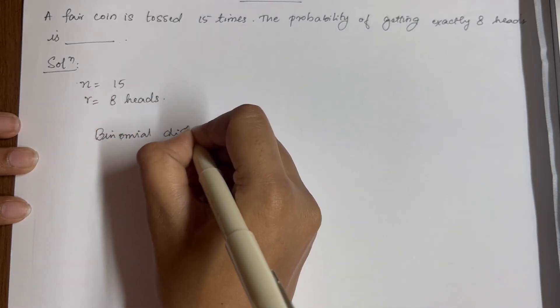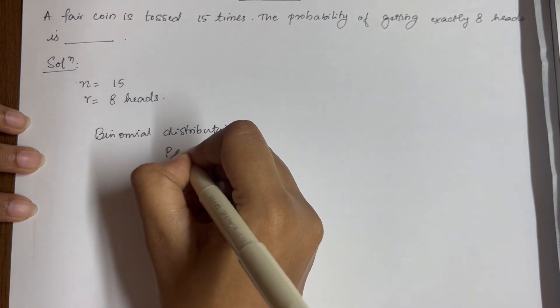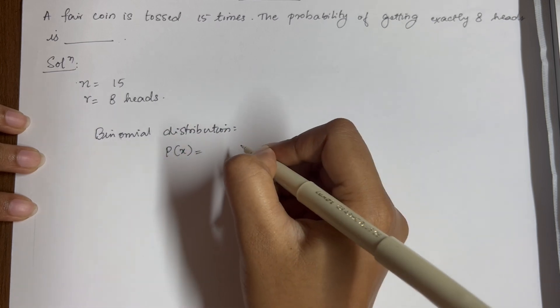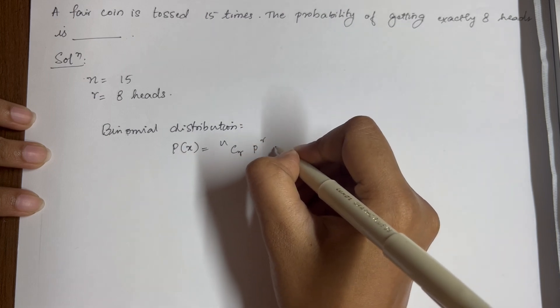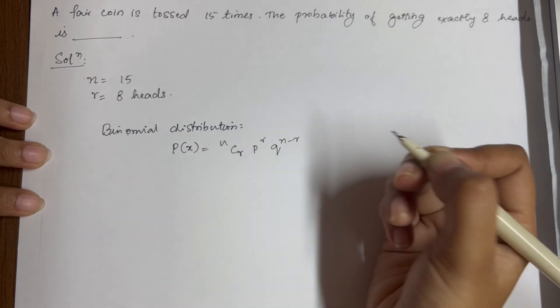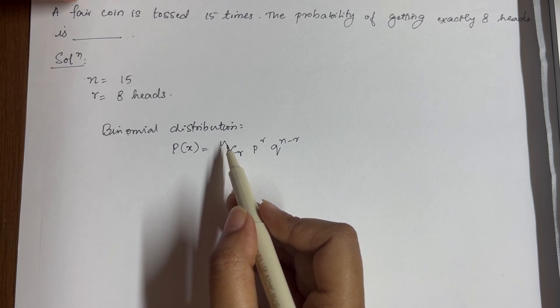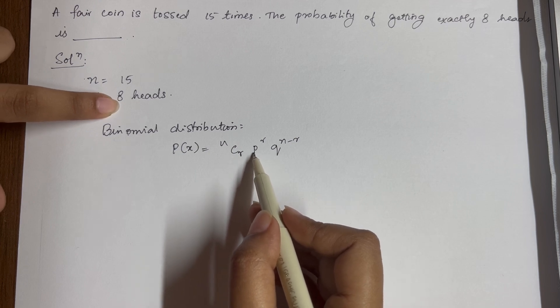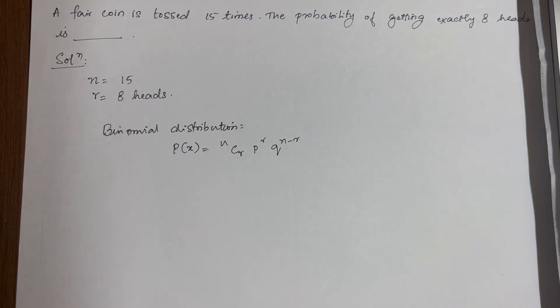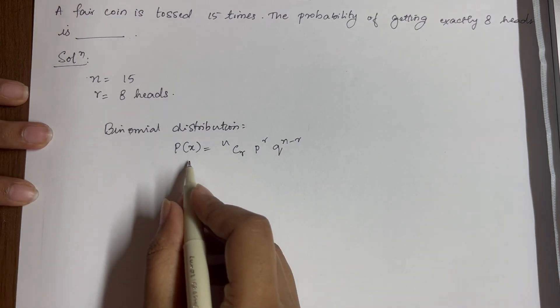Binomial distribution, its formula is given by P(x) = nCr × p^r × q^(n-r), where n is the number of times the coin is tossed, and r is 8 heads which is desirable, and p is the probability of success, and q is 1 minus p, which is probability of failure. So substituting all these values...